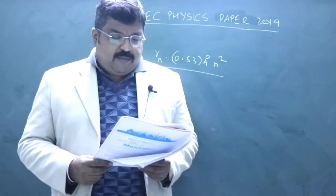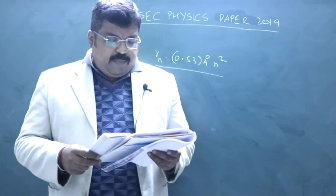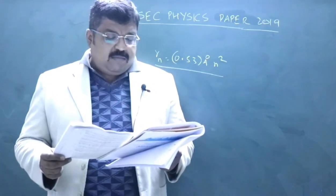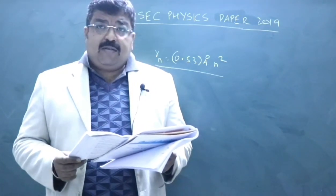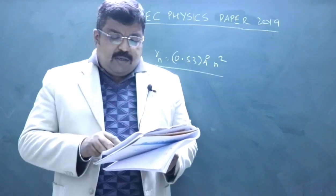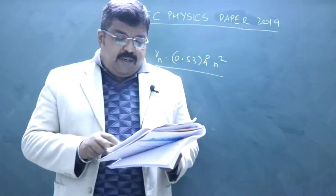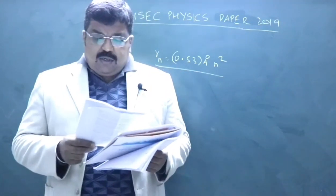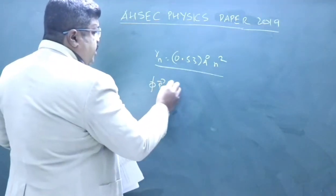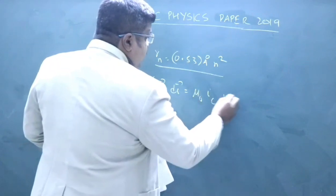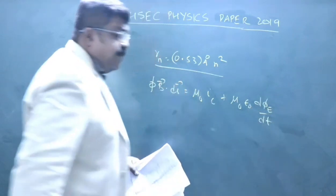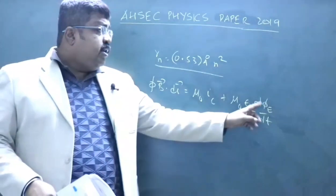Coming to the two marks questions: First question was what is the period of oscillation and mention the nature of oscillation. This is given on page 178 volume 1. 2B is based on Maxwell equation from electromagnetic waves. The general form you have to write is B dot dl equals mu naught Ic plus mu naught epsilon naught d phi E by dt. This epsilon naught d phi E by dt is called the displacement current.